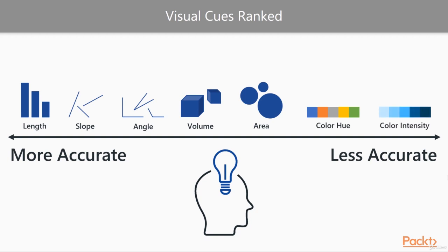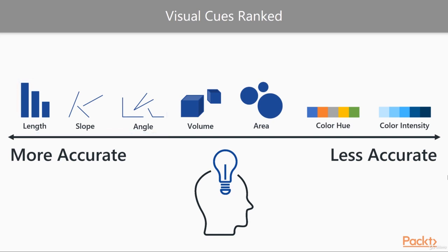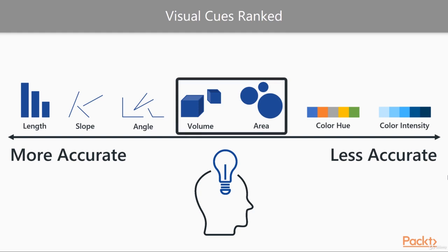It might seem obvious to some that length, slope, and angle take the crown when it comes to accuracy for value variances. What I want to draw attention to, however, is the volume and area cues here in the middle. There are certain chart types that often deploy these cues — charts that you've probably seen hundreds if not thousands of times — so let's explore some examples to see how drastic the change in data perception can be between these chart types.